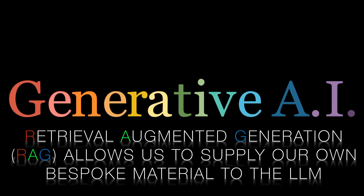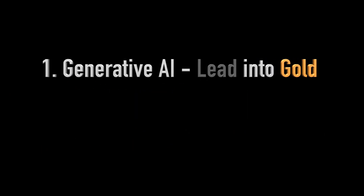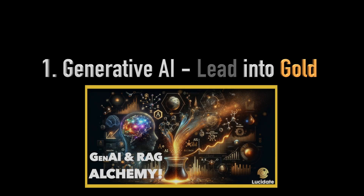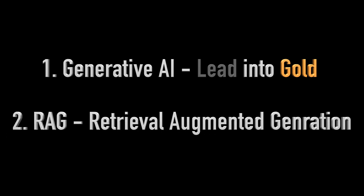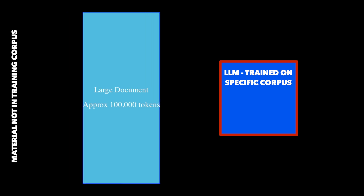The first video highlighted two key points. Firstly, how generative AI can act as an alchemist in document production by turning the lead of meeting minutes, chat logs and email threads into the gold of quality analytics and research reports. Secondly, how we can use RAG to train our LLM on material that was not part of its training corpus. In the first video we used vector databases to introduce our style guide and some source material.